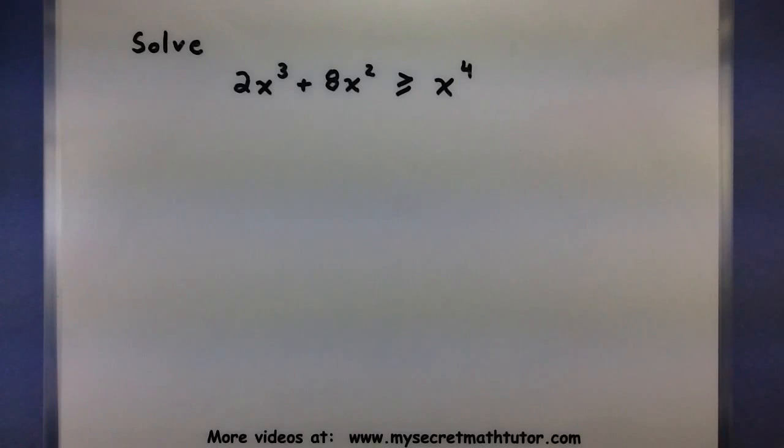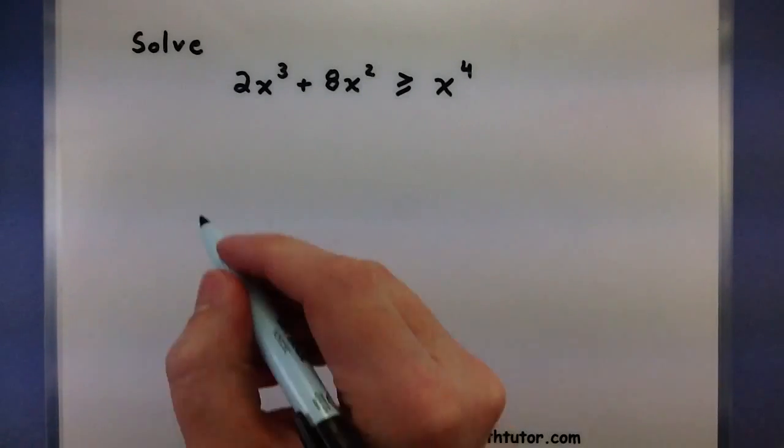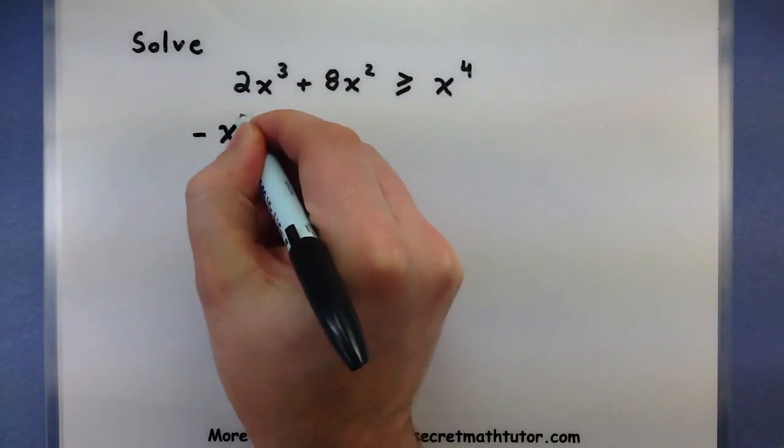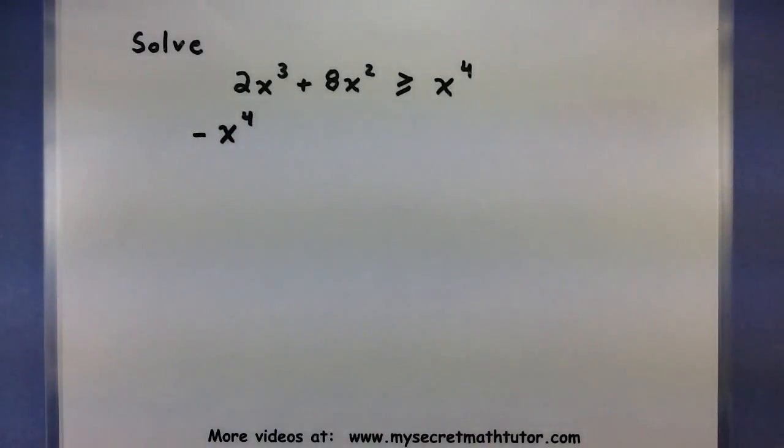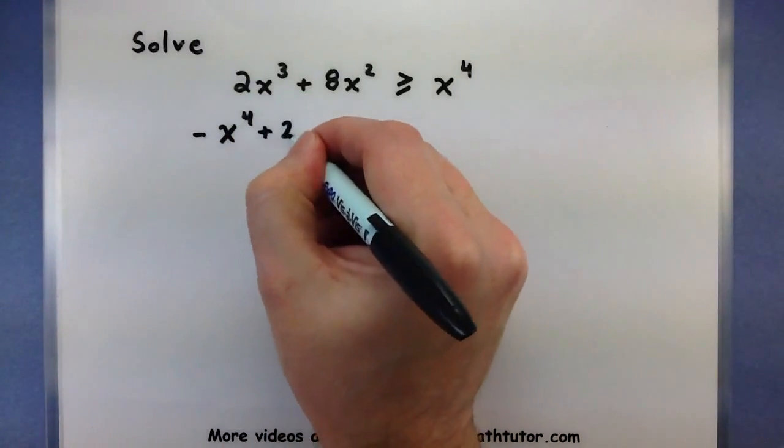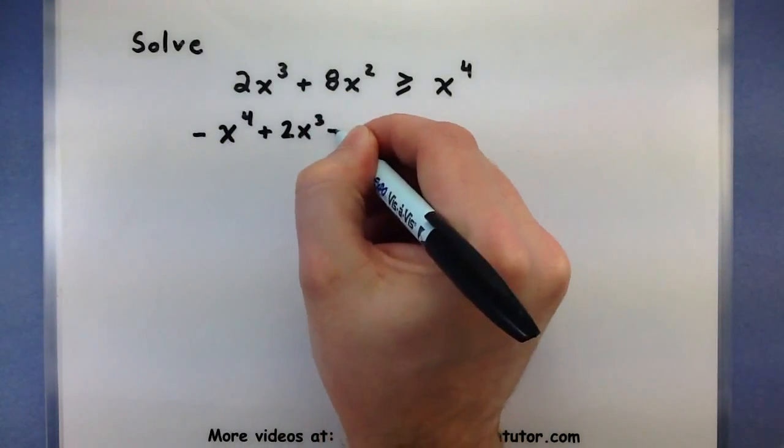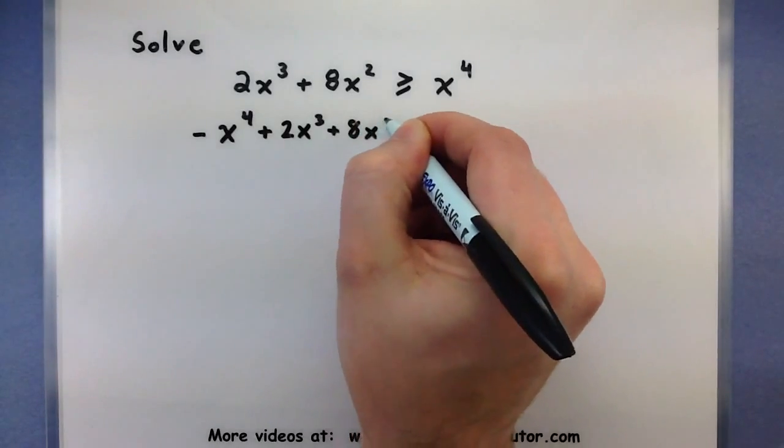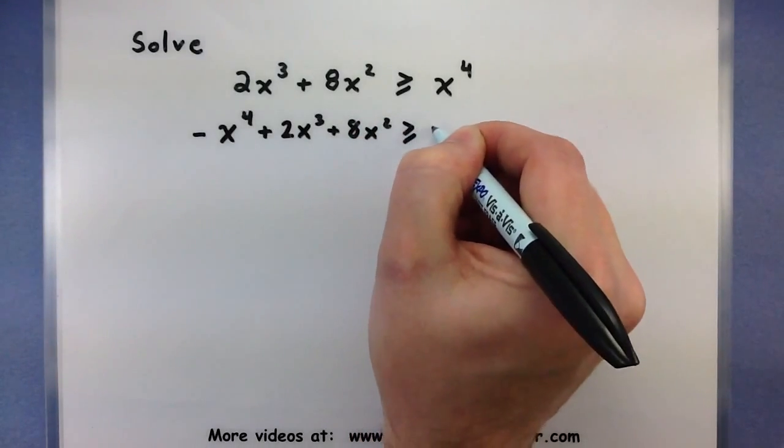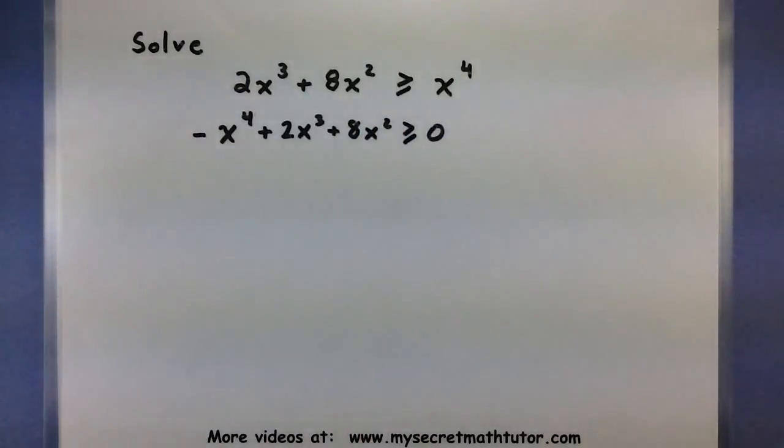So this next one to solve, I have 2x cubed plus 8x squared is all greater than or equal to x to the fourth. In our very first step, let's get everything over to one side so that it's in relation to 0. So I'm going to subtract an x to the fourth from both sides. So I still have a 2x cubed plus 8x squared, now greater than or equal to 0. Now that's an important step because then we essentially need to see whether it's above or below the x-axis.